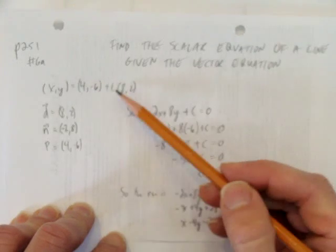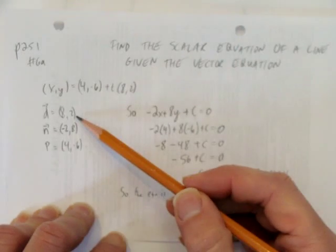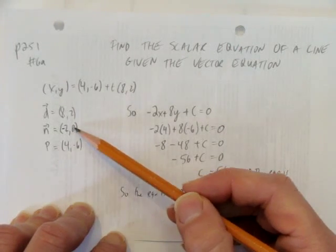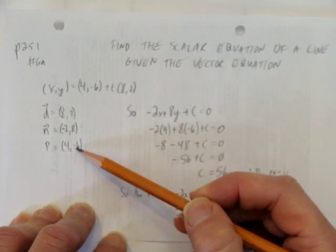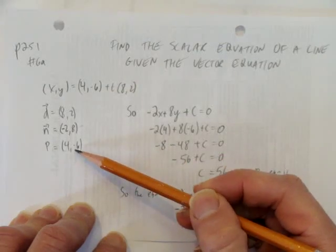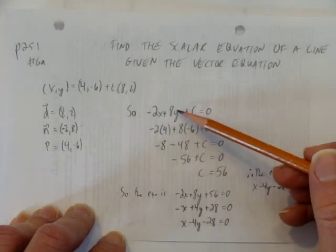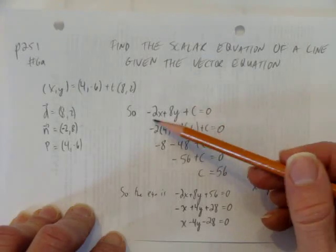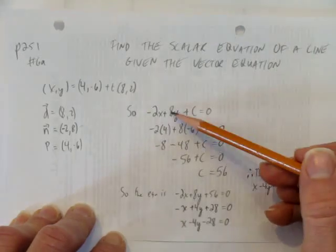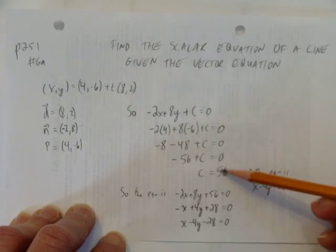We started with our vector equation. Got our direction vector. Flipped it and changed the sign. Could have reduced it there, but we didn't. And identified the point that we had given in the vector equation. Then we used the general form of the scalar equation of a line. We wrote down the coefficients based on the normal vector. We subbed in a point and solved for c.